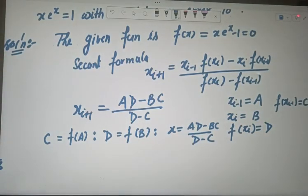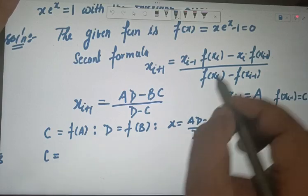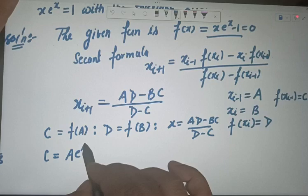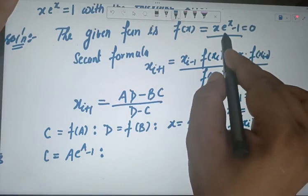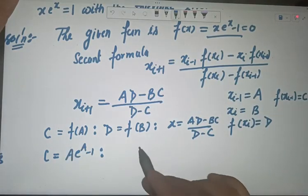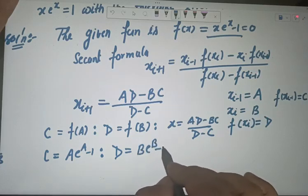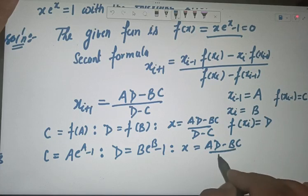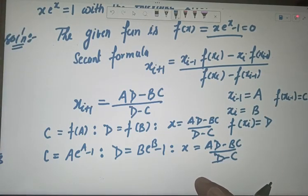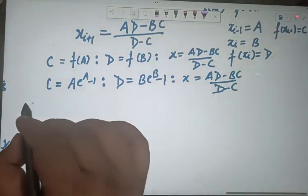According to this programming, you write c = a·e^a − 1 (putting 'a' in place of x), then d = b·e^b − 1 (putting 'b' in place of x), and then x = (a·d − b·c) / (d − c). When you press CALC, it will ask for values of a and b, and once you supply them, it will give the values of c, d, and then x.